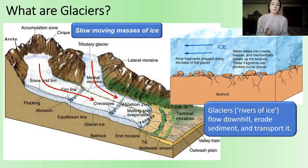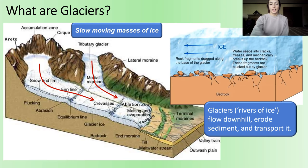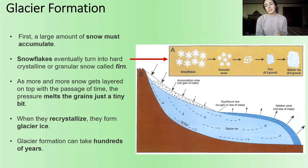As an introduction, glaciers are slow-moving masses of ice that flow downhill, erode sediment, and transport it. But before we get into deposition and stratigraphy, we have to talk a little bit about how glaciers form.